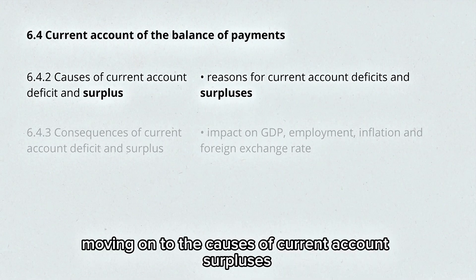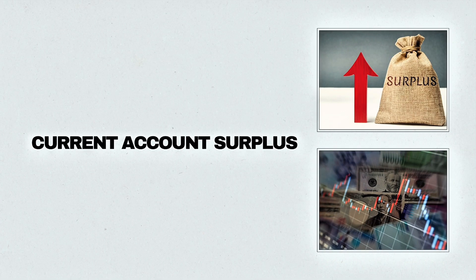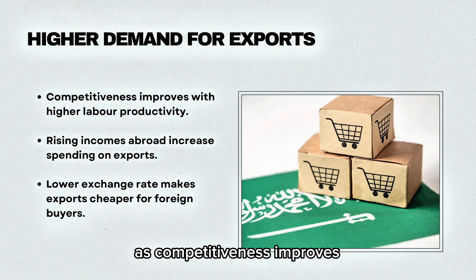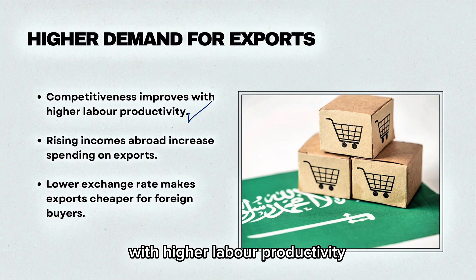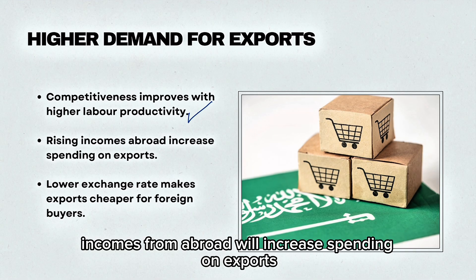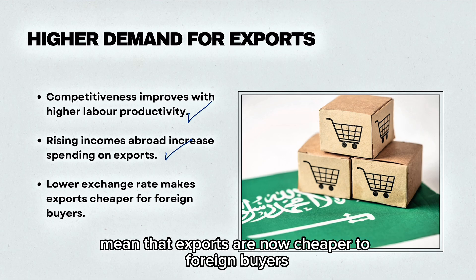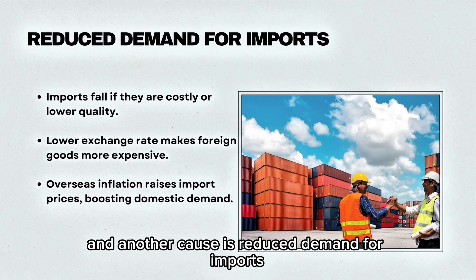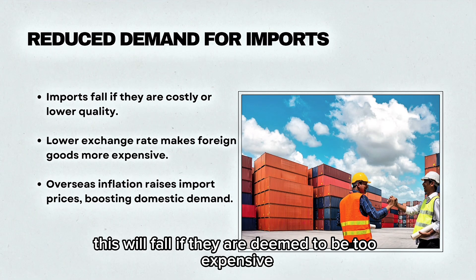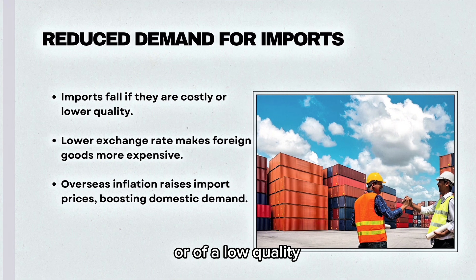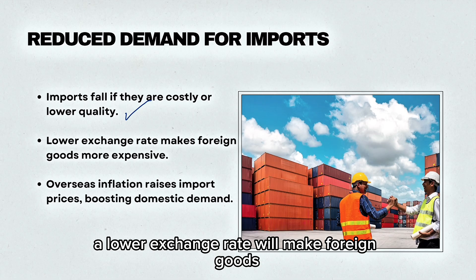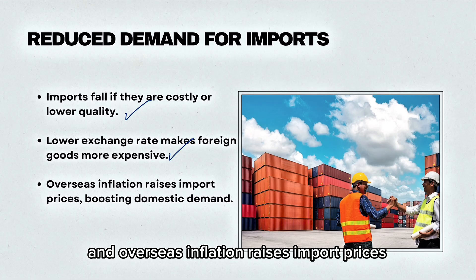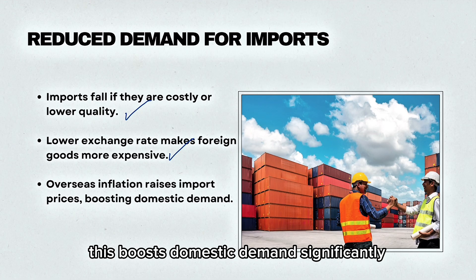Moving on to the causes of current account surpluses. One cause is higher demand for exports, as competitiveness improves with higher labour productivity. Rising incomes from abroad will increase spending on exports, and lower exchange rates mean that exports are cheaper to foreign buyers. Another cause is reduced demand for imports, which will fall if they are deemed too expensive or of low quality. A lower exchange rate will make foreign goods more expensive, making them less attractive, and overseas inflation raises import prices, boosting domestic demand significantly.